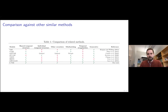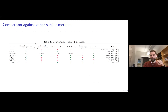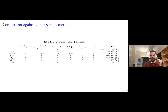Here is a brief comparison of our method against other similar techniques in the deep generative modeling framework. We compare in terms of ability to model shared temporal effects, individual-specific temporal effects, different types of covariates, minibatch-based inference, temporal irregularities, and generality. Our model has a tick in all of these boxes.